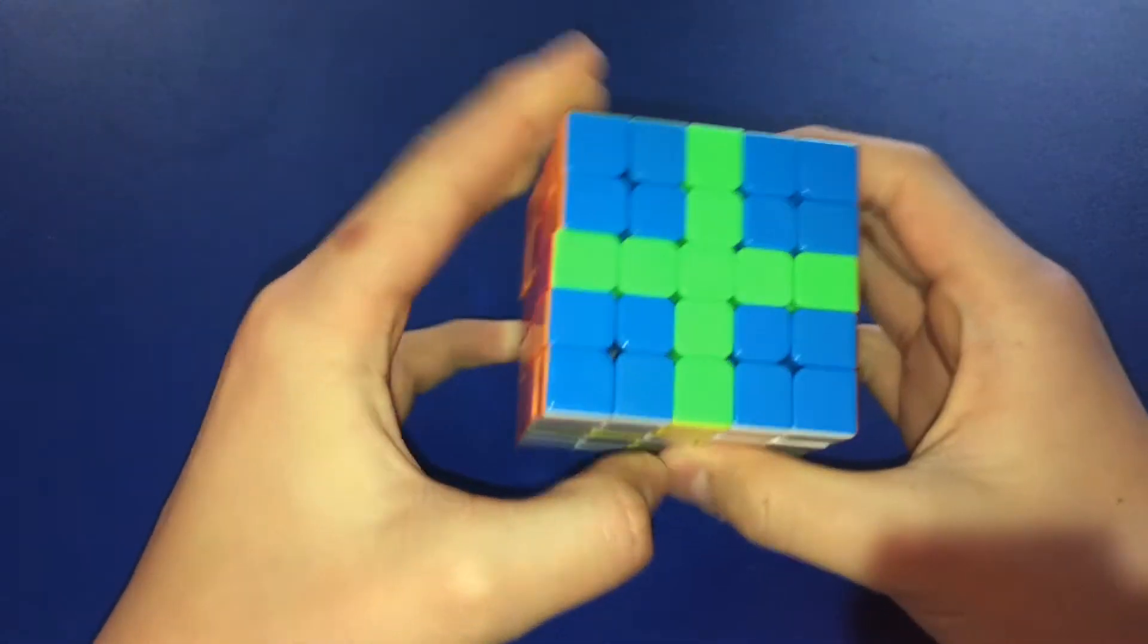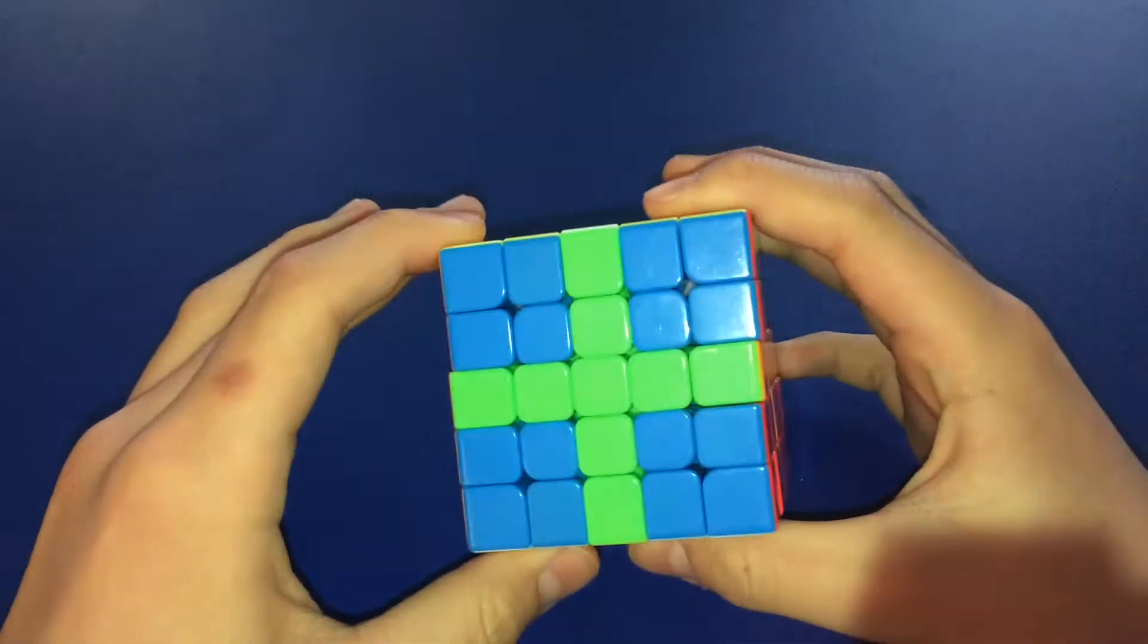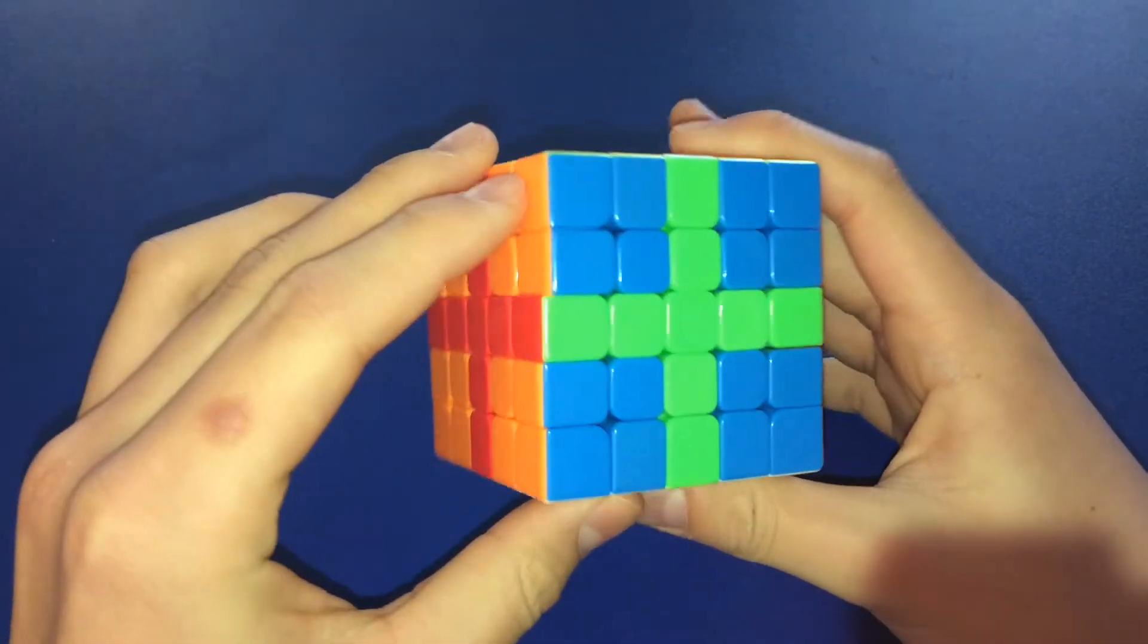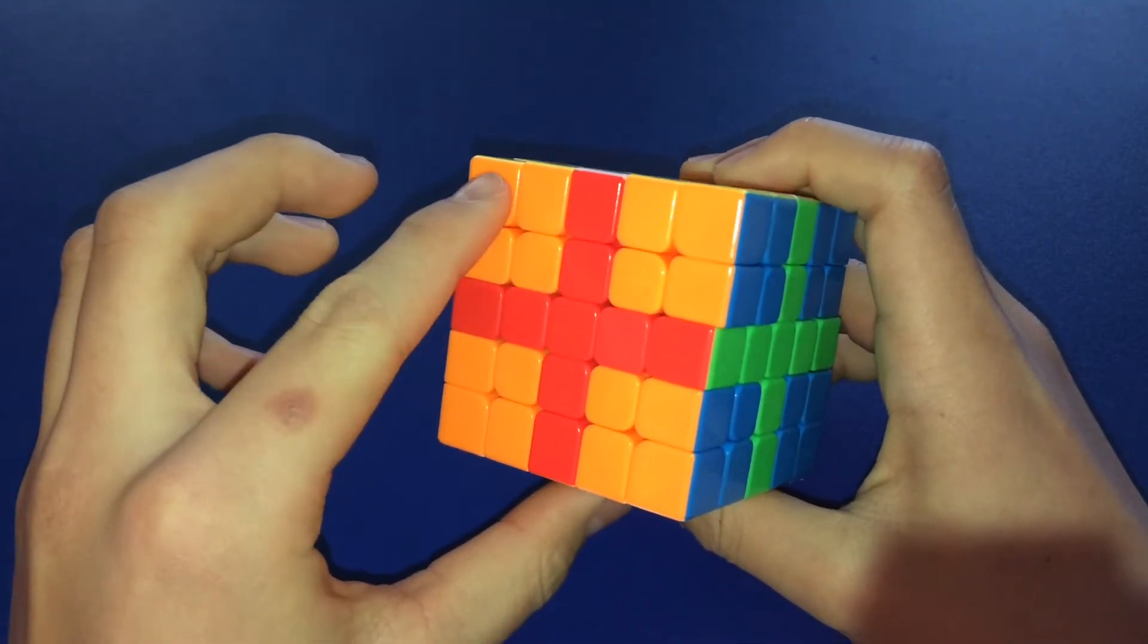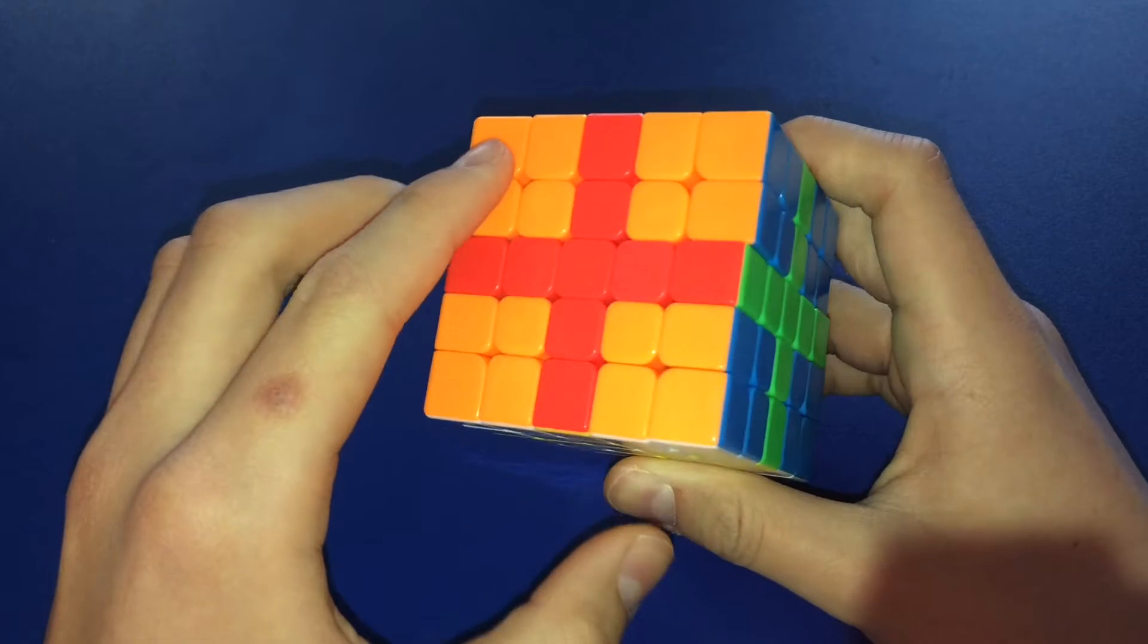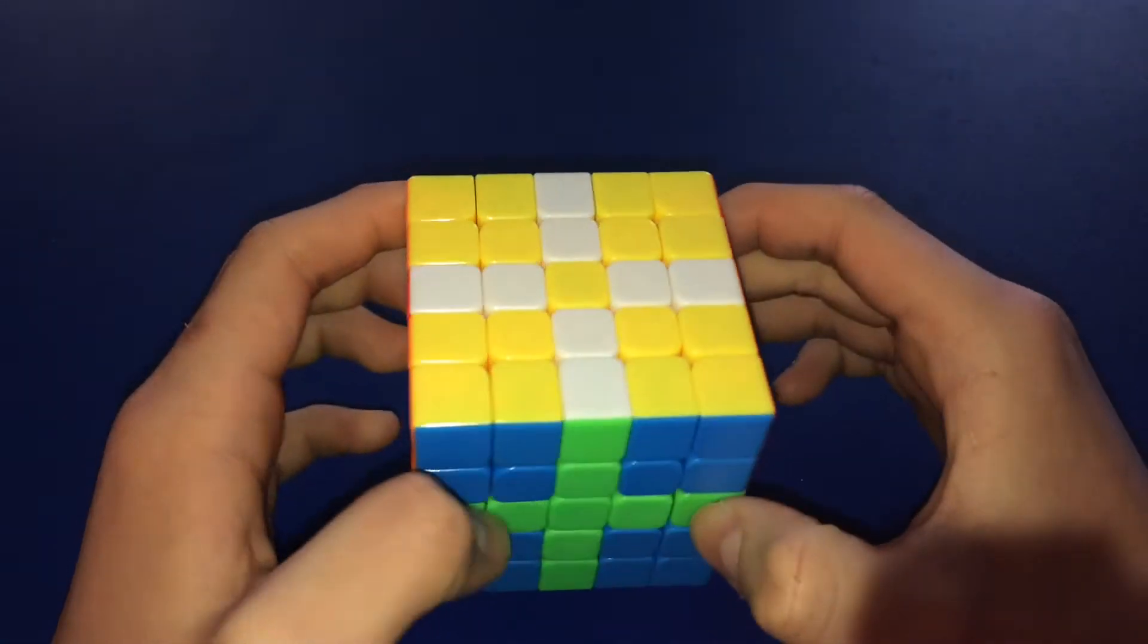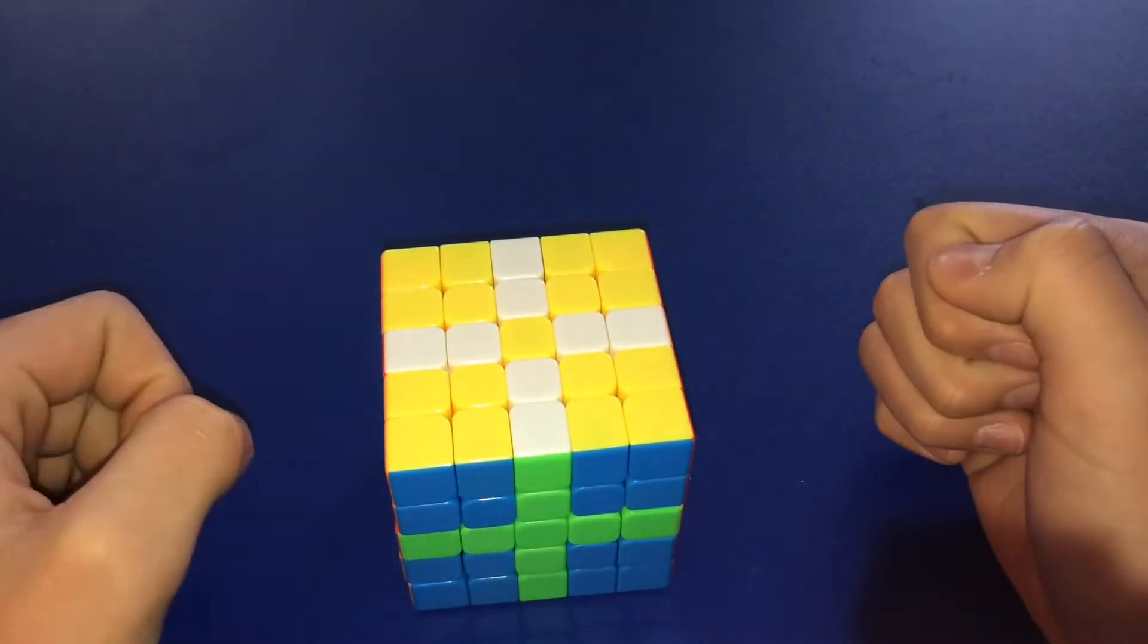Okay, so this cube has one, two, three, four, five little bits across, one, two, three, four, five down, and one, two, three, four, five back. There's also five down on this side, five across on this side, and it's always five across, five down, five back. So, is this a 10x10?